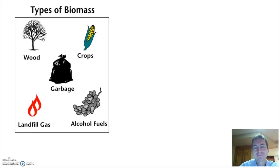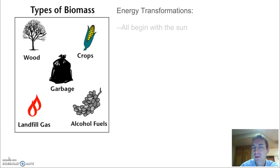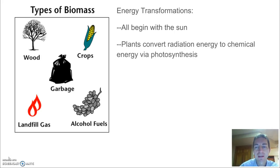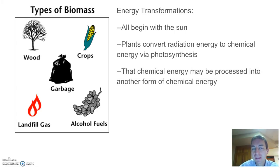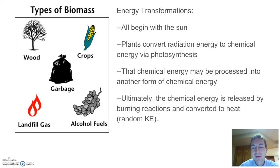All of these things pretty much have in common the same sequence of energy transformations, and that is the energy starting at the Sun. When the Sun's electromagnetic radiation comes down, that energy gets absorbed by plants and is used in photosynthesis to convert that radiation energy into chemical energy. We form sugars, and those sugars are going to be transformed as they go through some different processes — still chemical energy at that point.